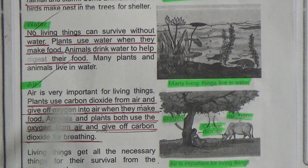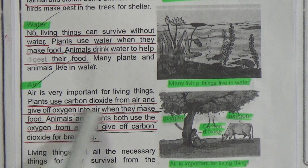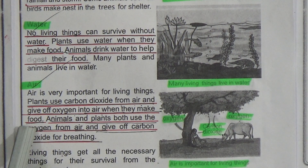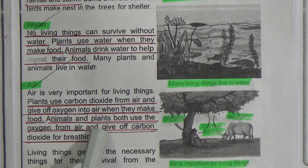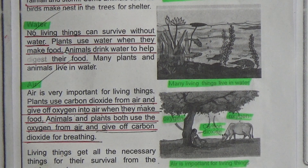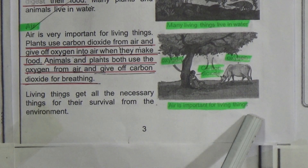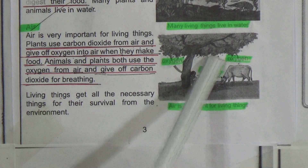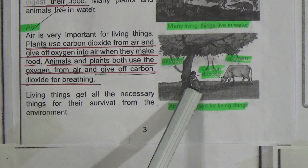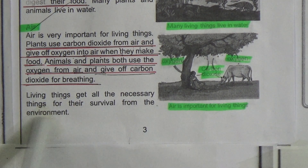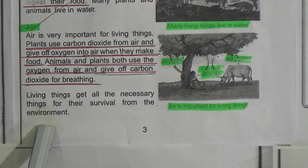Next topic: Air. Air is very important for living things. Plants use carbon dioxide from air and release oxygen into the air when they make food. Animals and plants both use the oxygen from air and give up carbon dioxide for breathing. Underline this line. Trees give us oxygen and humans give carbon dioxide into the air. Living things get all the necessary things for their survival from the environment.